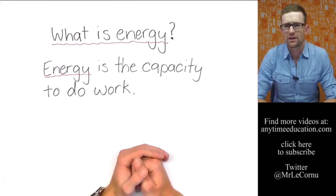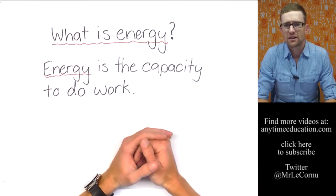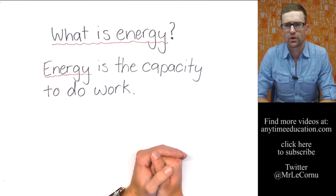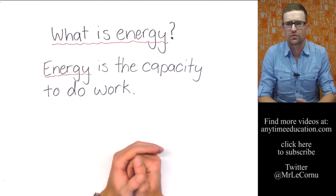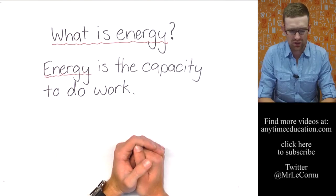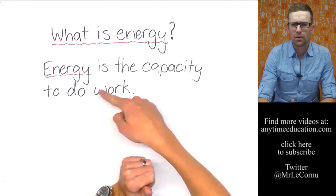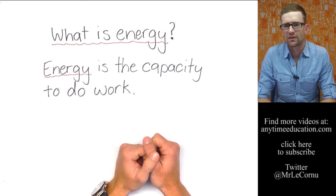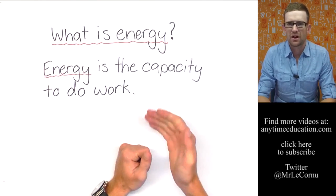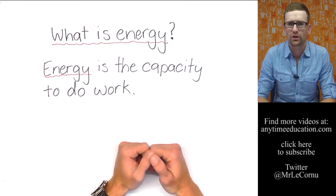Well, a simple way to describe energy is the capacity to do work. Think about it for your own definition of energy. If you have lots of energy, then you're able to do lots of work. If you don't have much energy, then you're not going to be able to do much work. And that's the simple description.